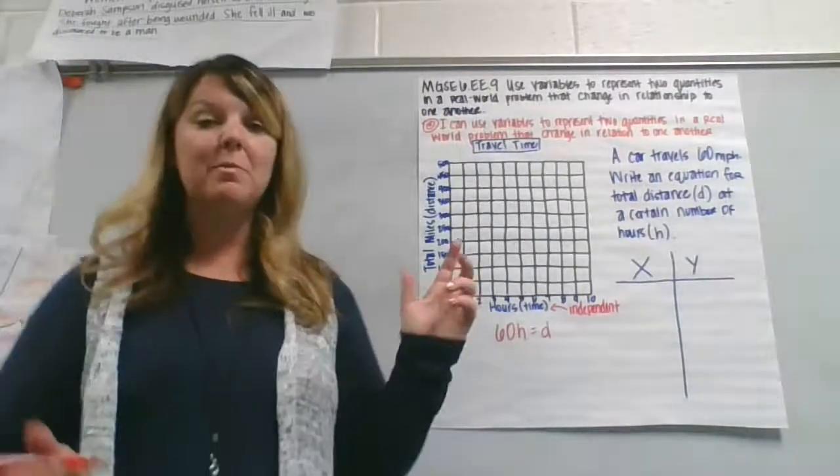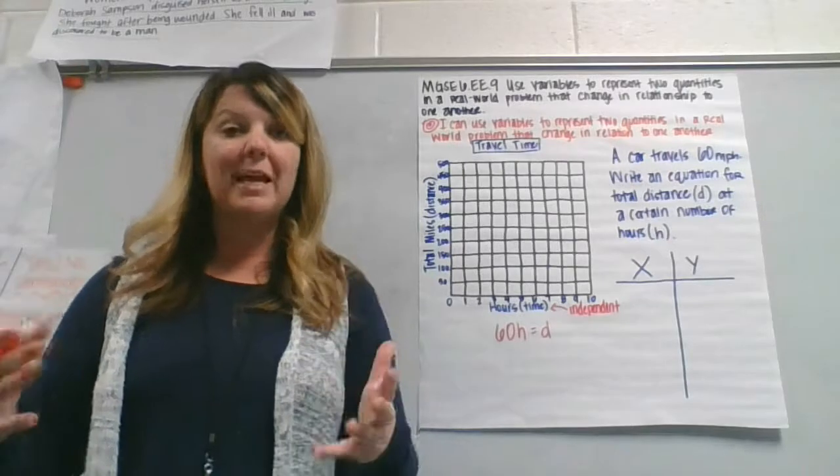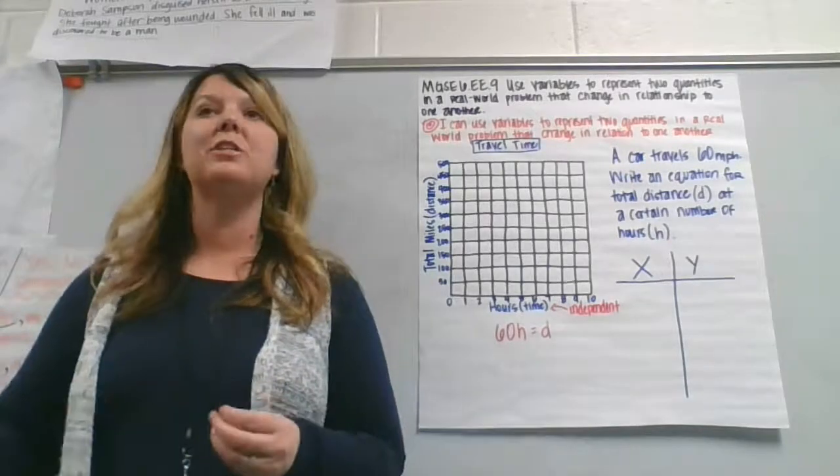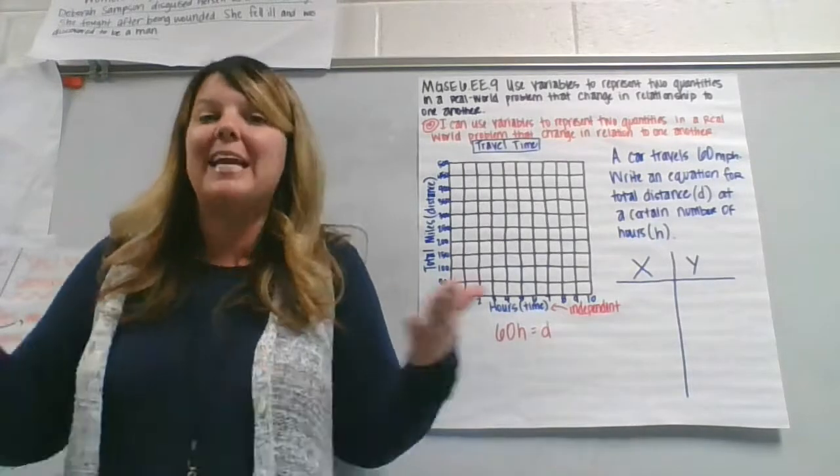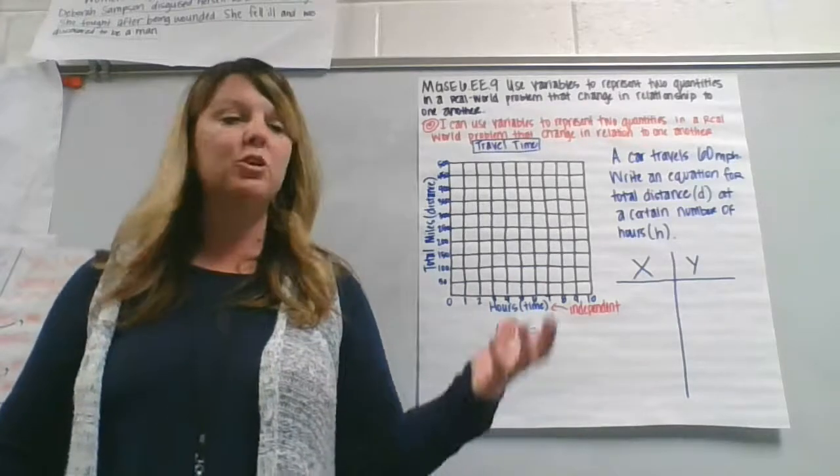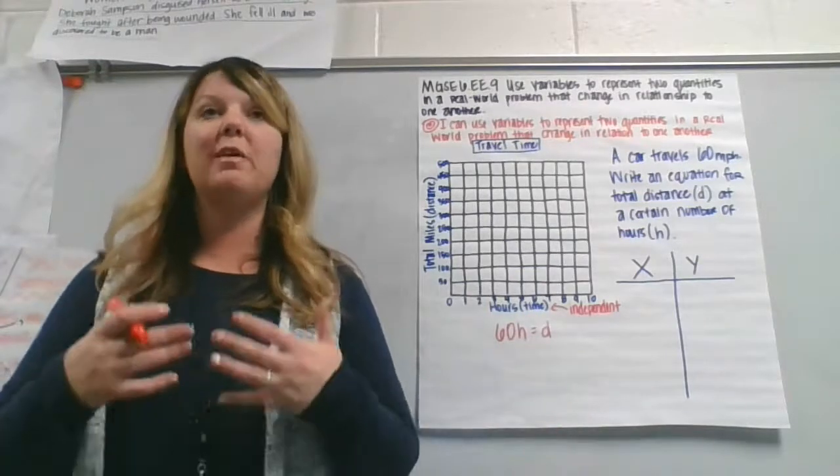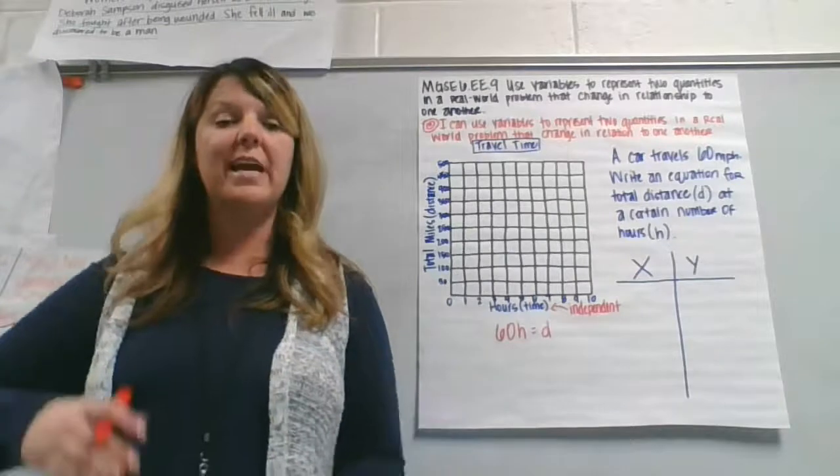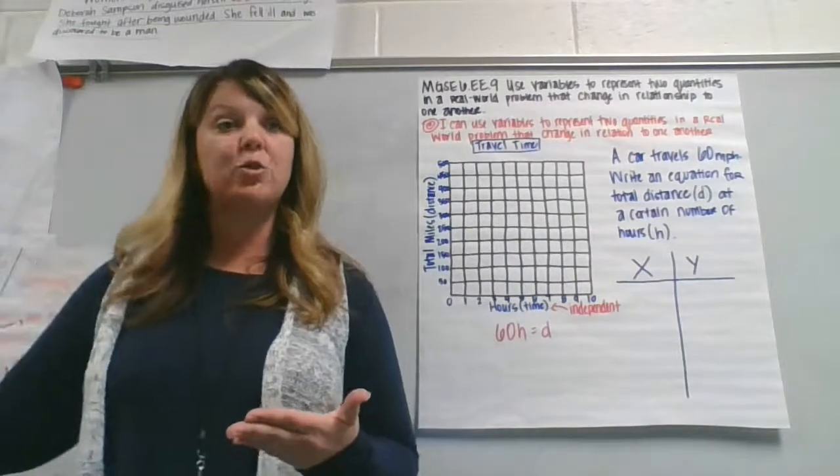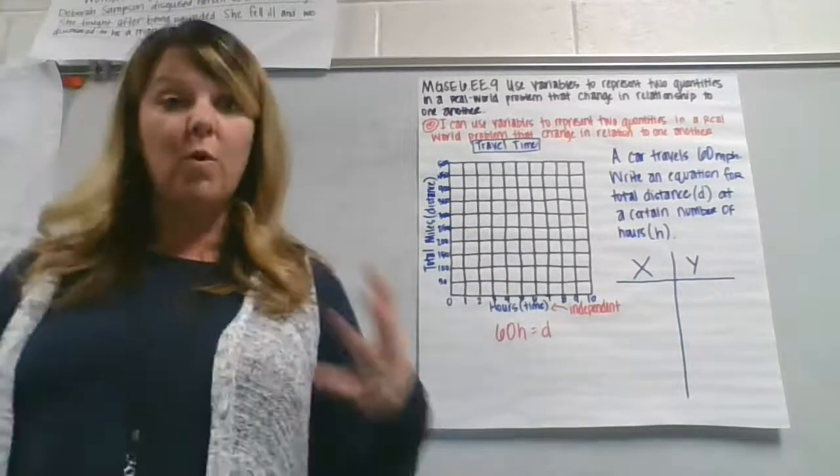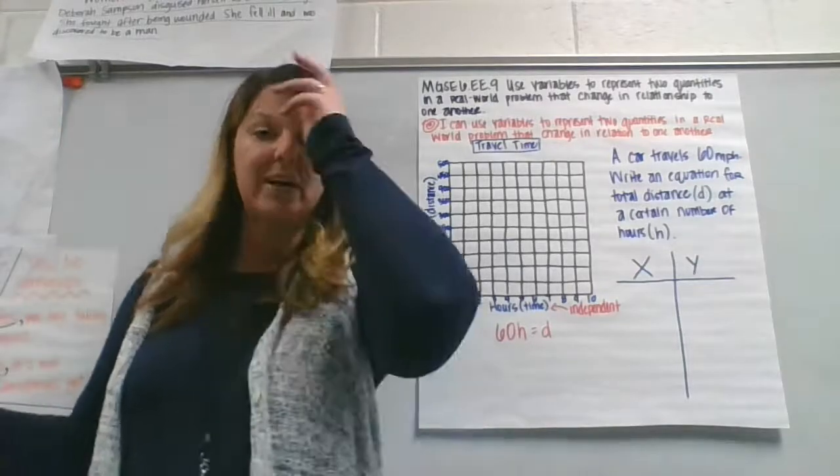In the case of this situation, our hours, this is going to be our independent variable. And the miles that we travel is our dependent variable because the miles that we travel depend on how many hours we're driving. We're traveling 60 miles per hour. So if we travel for two hours, then we're going to be at 120 miles. If we travel for four hours, we're going to be at 240 miles.